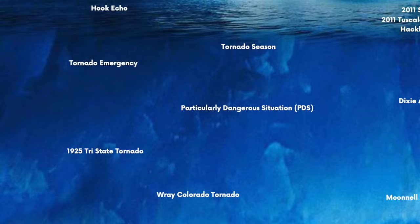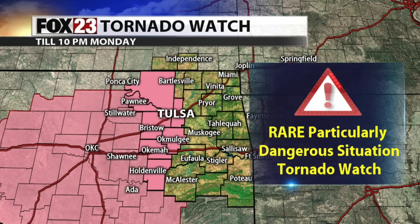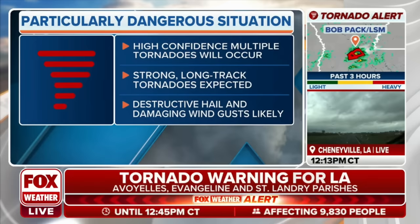PDS, aka Particularly Dangerous Situation. The best way to describe PDSs are like an enhanced tornado watch — where not only are the ingredients right for a tornado, but they're super prime. PDSs are also issued for potential tornado outbreaks and are issued by the Storm Prediction Center. Only 3% of all tornado watches have PDSs.